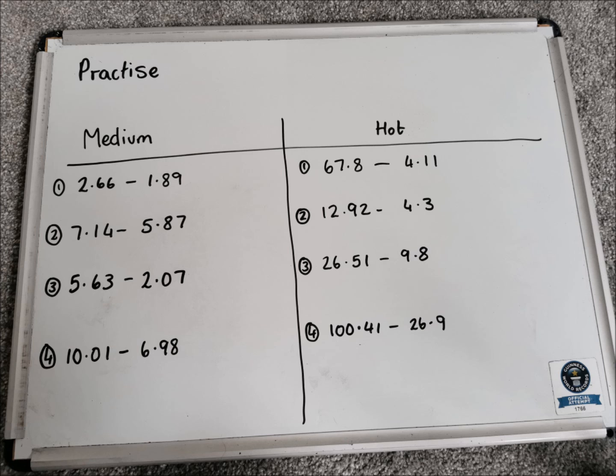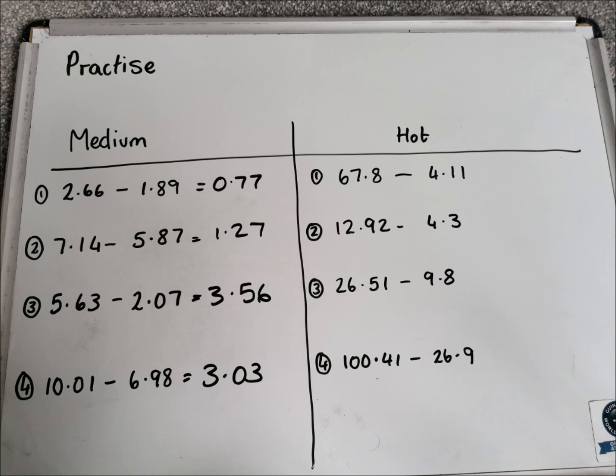Alright guys, let's go over the answers for the medium, first of all. So the first one, we should have got 0.77. The second one, 1.27. The third one, 3.56. And the last one, 3.03.